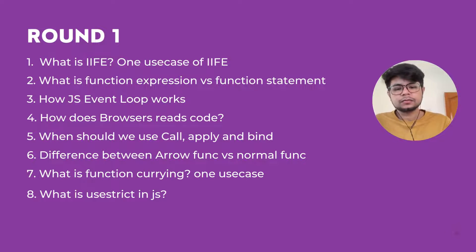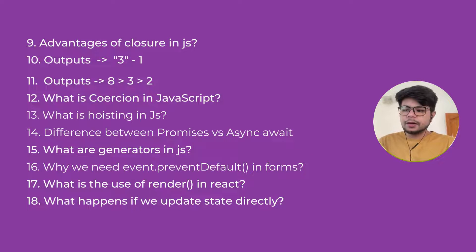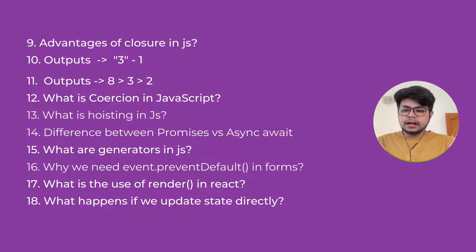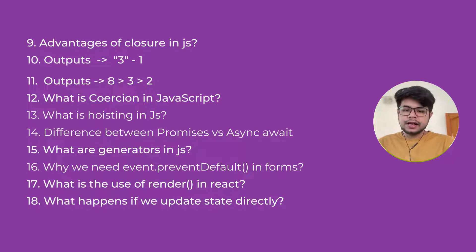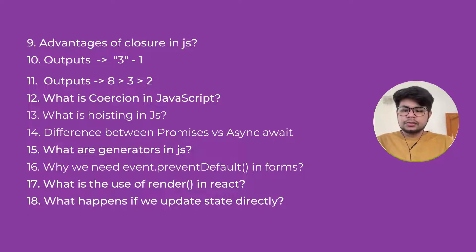The ninth question was about the advantages of closures in JS — basically when should we use closures and how are they beneficial. The tenth and eleventh were a couple of output-based questions, as you can see on the screen. The twelfth was what is coercion in JavaScript — can you explain some scenarios where JavaScript does coercion. The thirteenth was what is hoisting in JS.